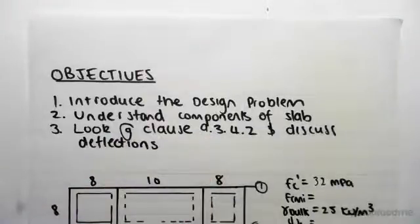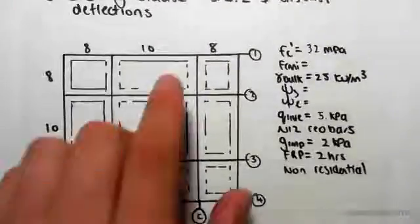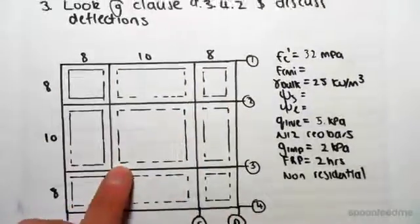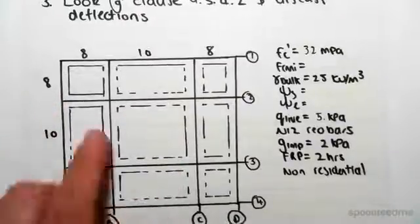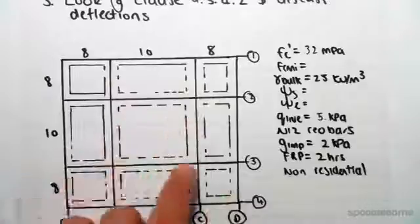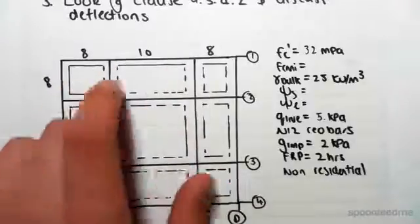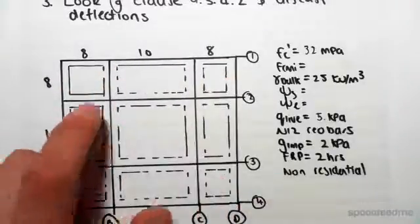So here's our design problem. We have this grid. Now there's going to be a couple different slabs we're going to be looking at. You can see it's a little bit symmetrical. We have 8 by 8, 10 by 8, and 10 by 10. This is there, there, there, and there. This is there, there, there, and there. And this is by itself.